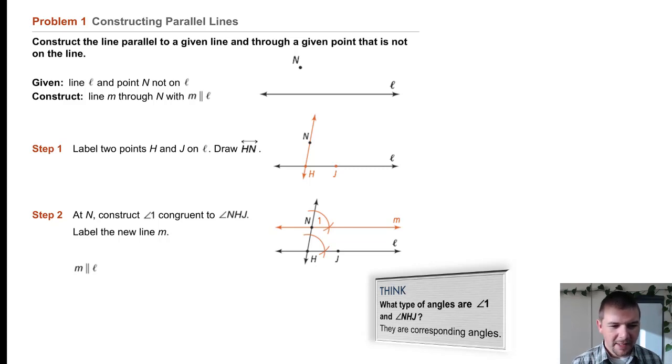Step 2: at point N, construct angle 1 congruent to angle NHJ below. Label the new line M. M is parallel to L.